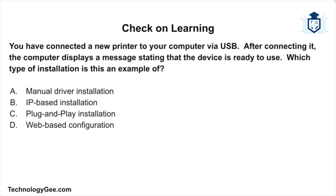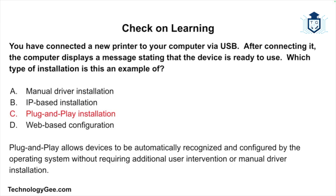Now let's get into the check on learning. Question one: you have connected a new printer to your computer via USB. After connecting it, the computer displays a message stating the device is ready to use. Which type of installation is this an example of — manual driver installation, IP-based installation, plug-and-play installation, or web-based configuration? The correct answer is plug-and-play installation, which allows devices to be automatically recognized and configured by the operating system without requiring additional user intervention or manual driver installation.